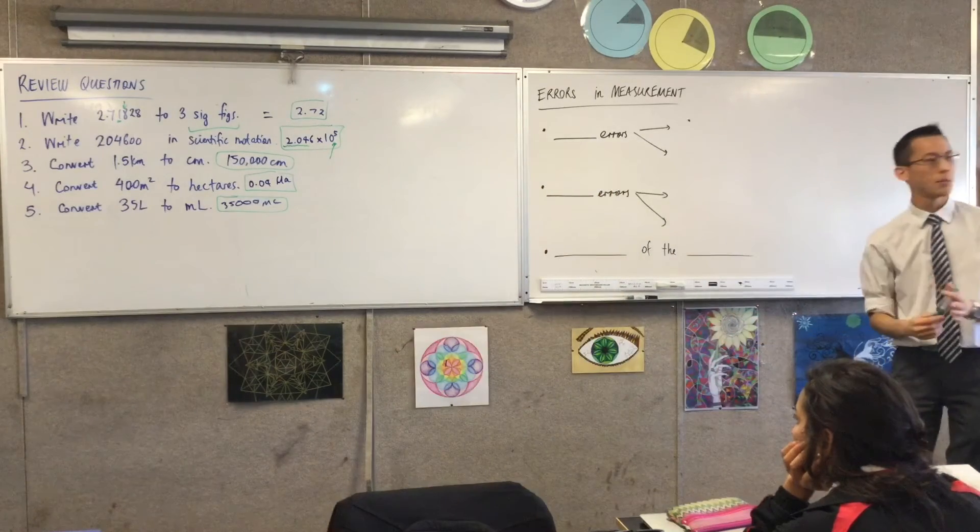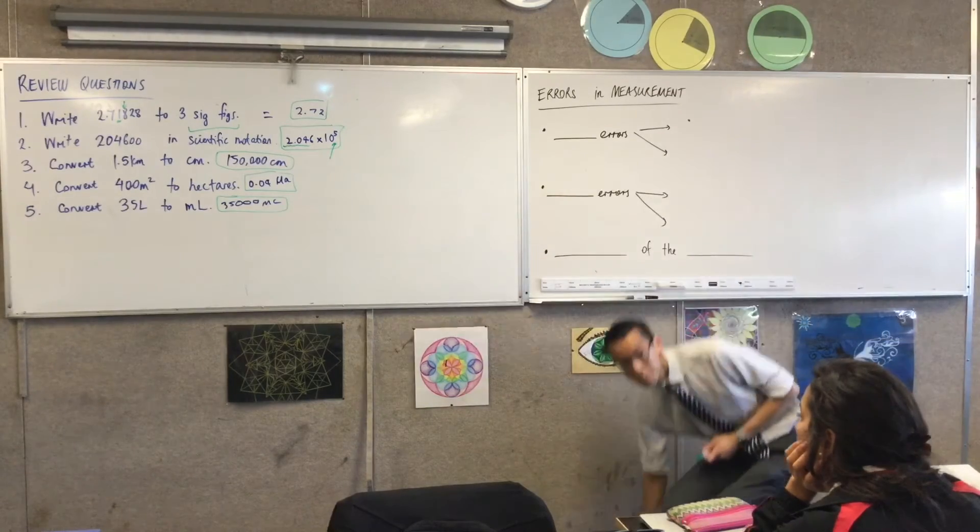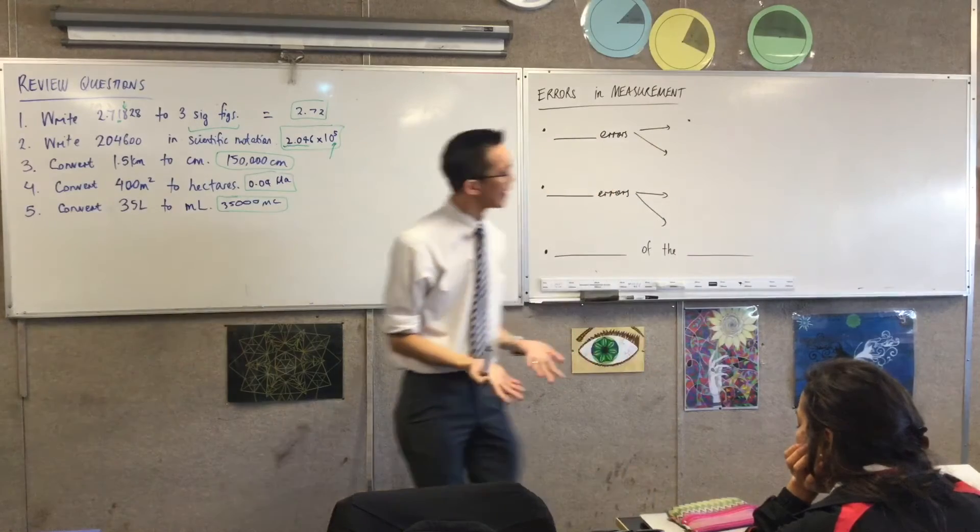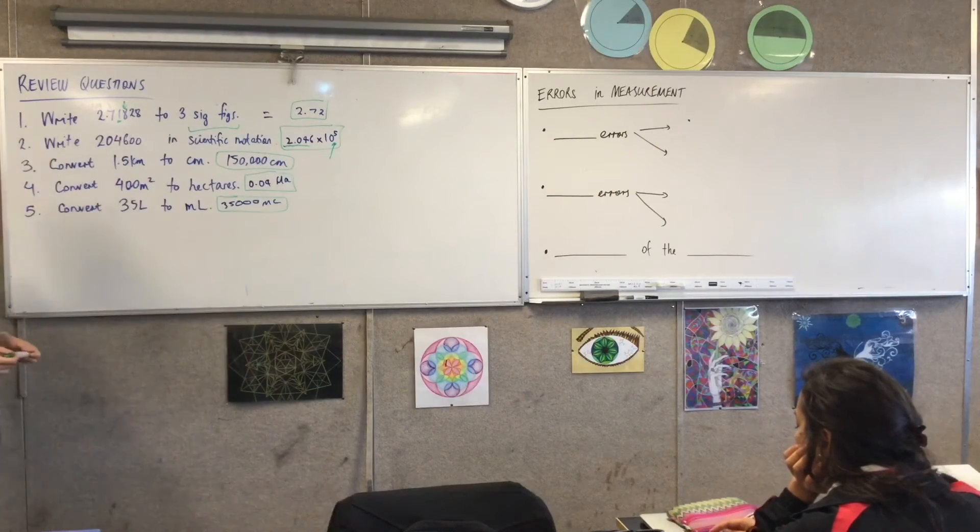Conversion. Kilometers to centimeters. What are we multiplying by in this case? Maybe I should ask a question before that. Why are we multiplying and not dividing?